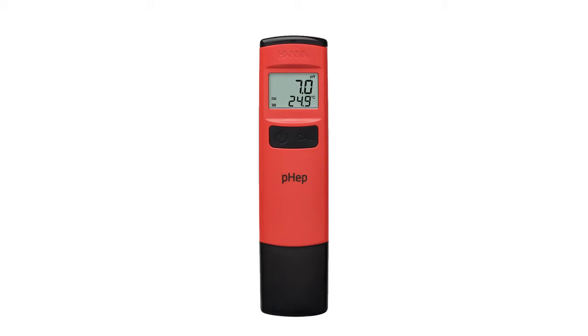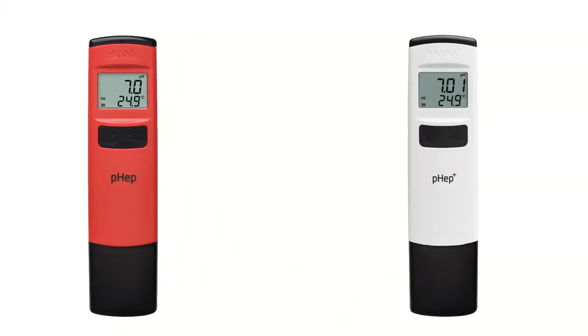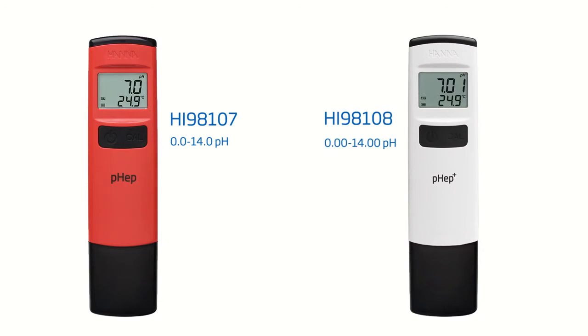Our two most popular meters in the pHep family have been redesigned. They are the HI98107 and the HI98108. Both meters operate in the same fashion, with the only difference being the resolution.